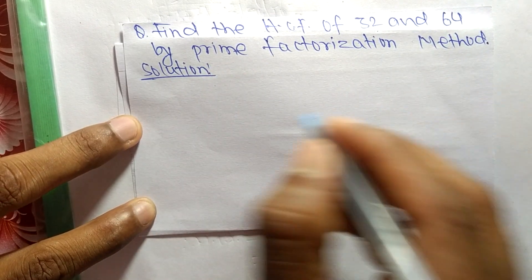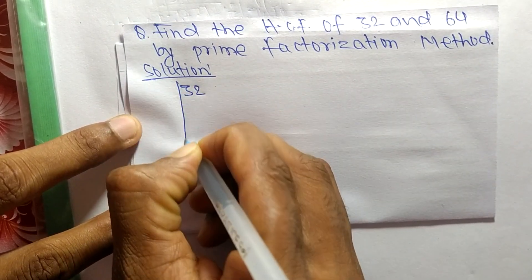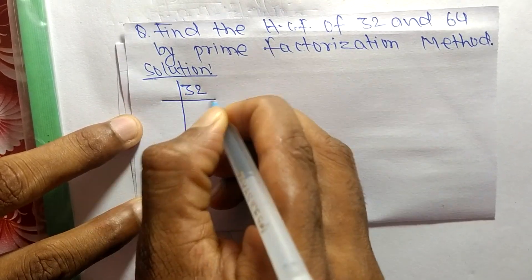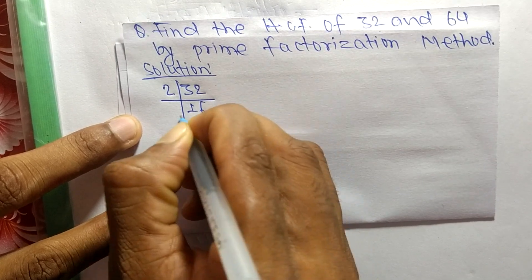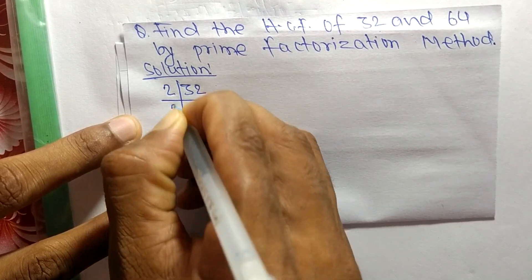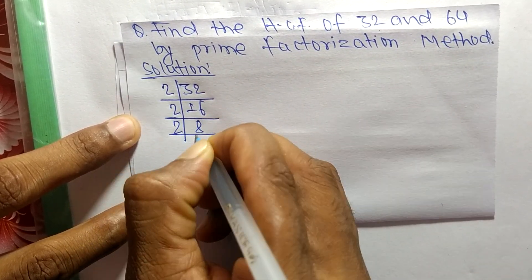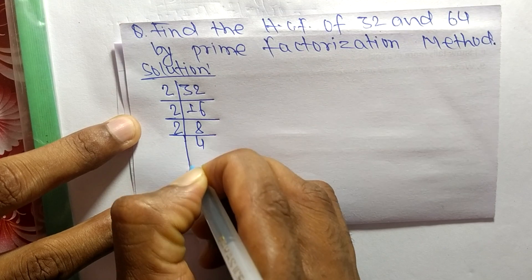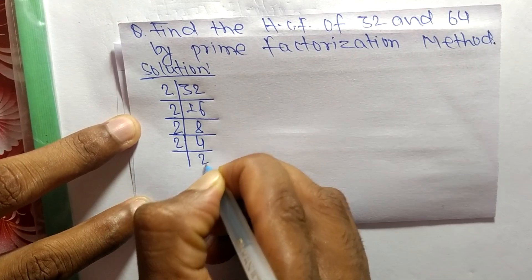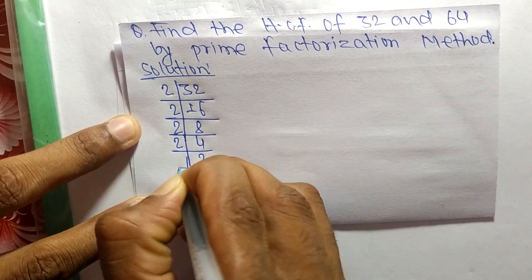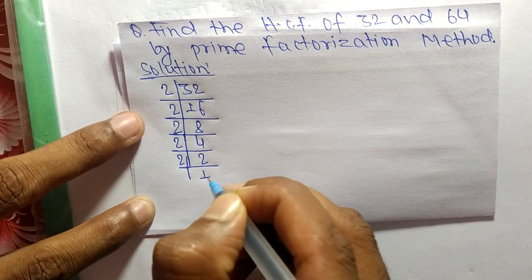First, we find out the prime factors of 32. It is 2 times 16 means 32, 2 times 8 means 16, 2 times 4 means 8, 2 times 2 means 4, and 2 times 1 means 2.